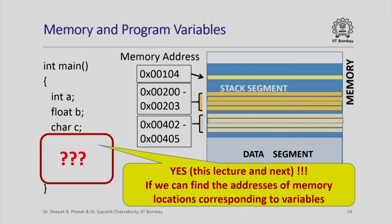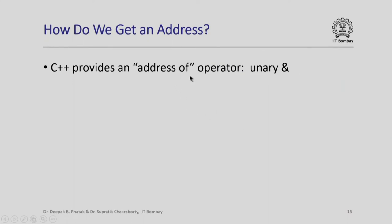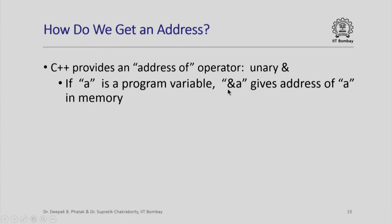Yes, we can indeed access memory locations by their addresses, and we will see how to do that. But first we must be able to find the addresses of memory locations corresponding to different variables. In C++ we have a special operator called the address-of operator, represented by the ampersand symbol (&). It is a unary operator, and we can use it to get the address of a variable. So if A is a program variable, &A gives us the address of variable A in memory.